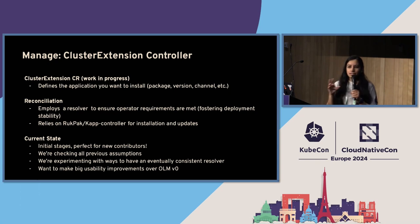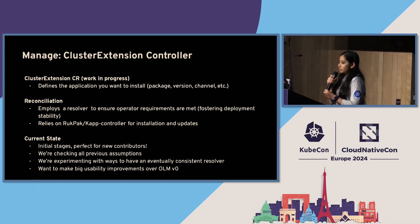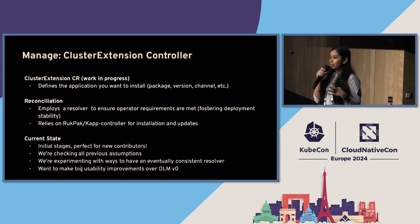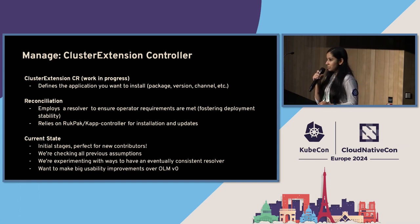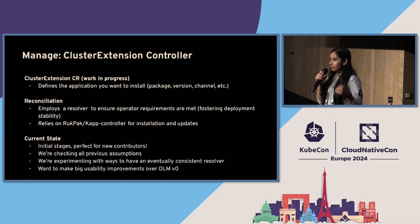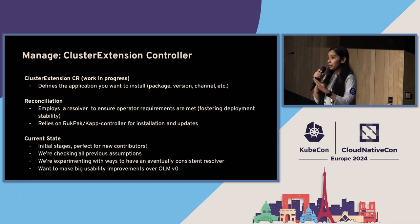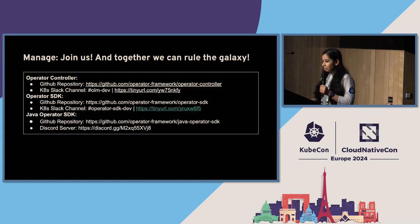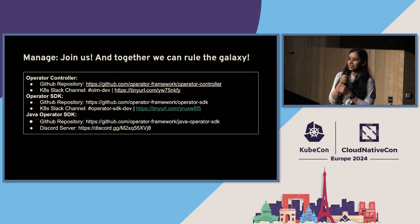The cluster extension controller is the heart of OLM. It looks for the user-facing API, reads what the user provides, calls the dependency resolver, brings in contents from Catalog D, makes sure the App CR is created, and the Applier does its job applying contents to the cluster. It also reads the status of whatever the Applier has done and brings it back to the user. Those were the updates about OLM V1 in general.